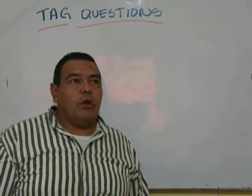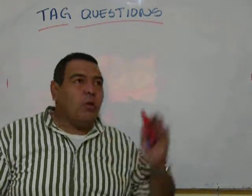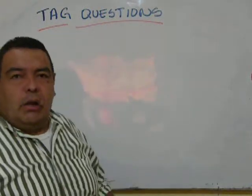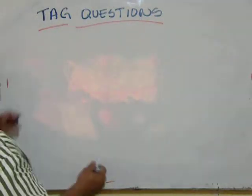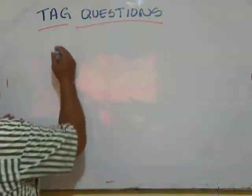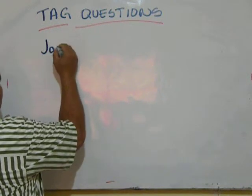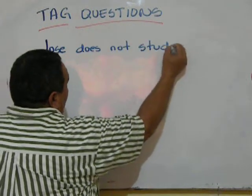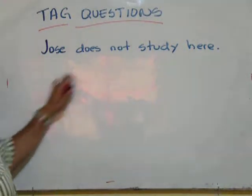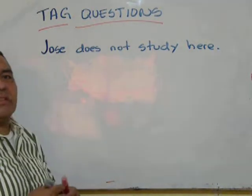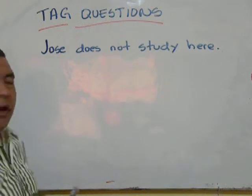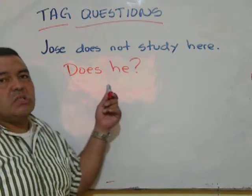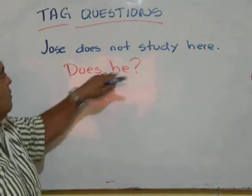This is a long video, but tag questions are very important. American people use tag questions a lot in conversation. For example: 'Jose does not study here.' It's a negative expression, so the tag question has to go in a positive way. Jose does not study here, does he?